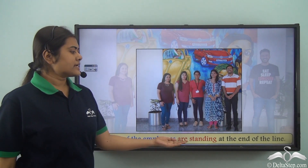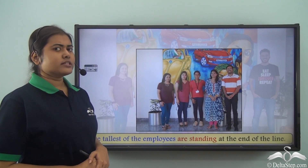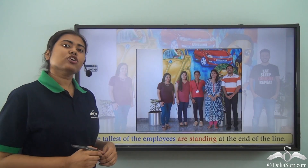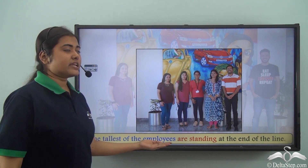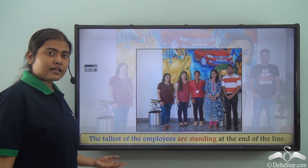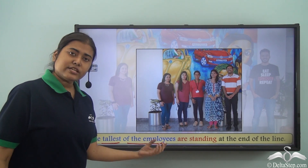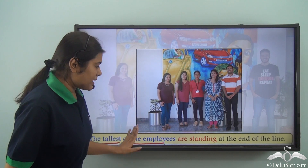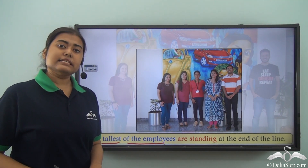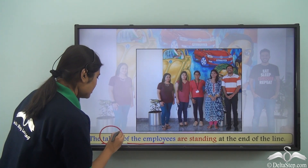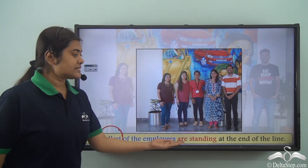The tallest of the employees are standing at the end of the line. Now do you think this is a correct sentence? It is not. Here what is our subject? 'The tallest of the employees' — this entire thing is the subject. Now within the subject, is 'employees' the proper subject? No. We are saying the tallest of the employees is standing at the end of the line. What we mean is we are referring to one particular person who is the tallest among the employees, and that particular person is standing at the end of the line.